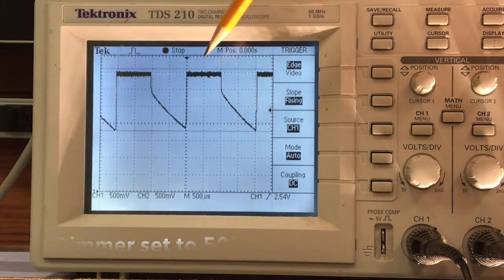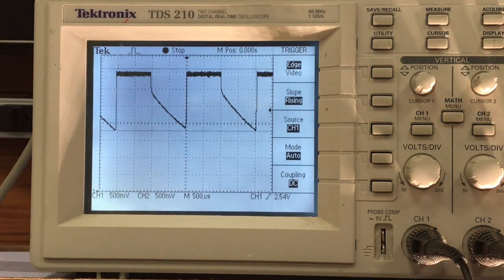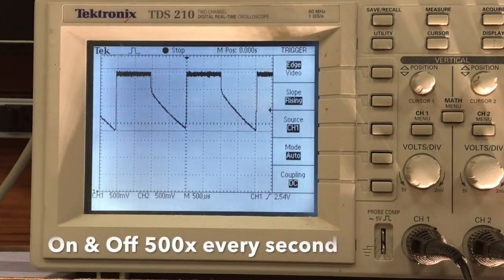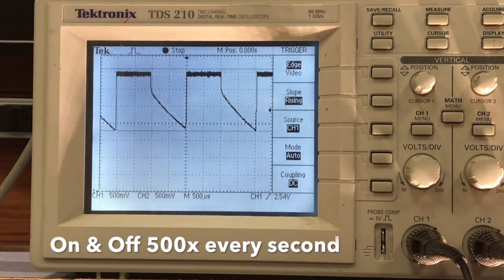Now, to complete this one cycle right here, we're doing that 500 times every second. So we're turning this light on and off 500 times every second.